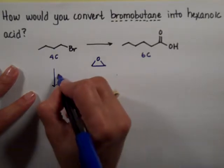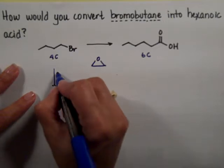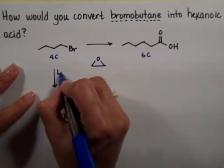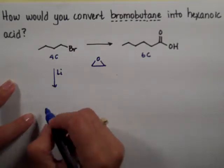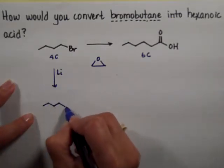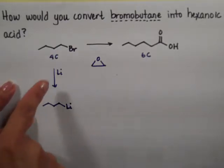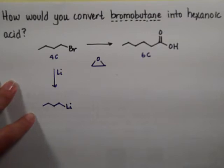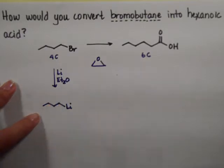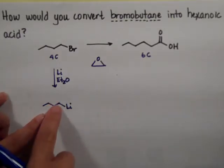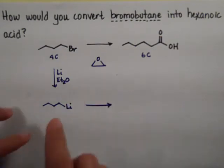I prefer Grignard reagents, but I'm going to use an organolithium. So you take lithium, cut a little chunk of it, and throw it in your bromobutane. If you don't like organolithiums, you can use a Grignard — that's perfectly fine; in that case, instead of lithium, just throw in some magnesium turnings. The solvent is diethyl ether, and now I have a negative carbon that can easily attack the epoxide.